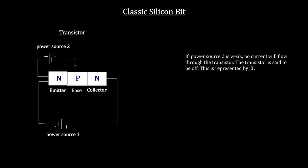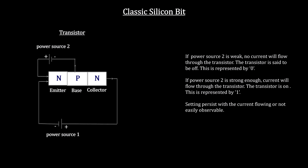For a transistor, the absence of a voltage on its control line stops current from passing through, making it off or equal to zero. An applied voltage will trigger a current, making it on or equal to one. These values are easily set, changed and read and once set, they persist for as long as needed.